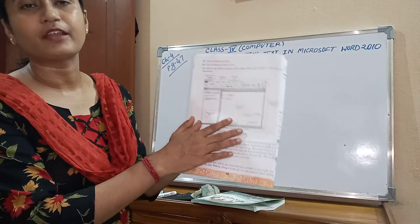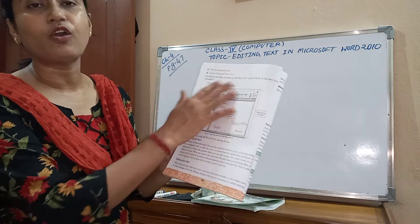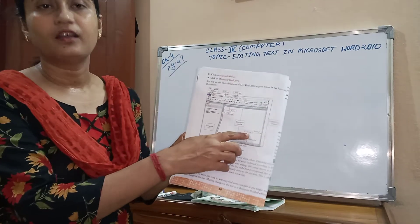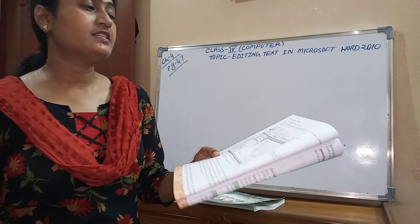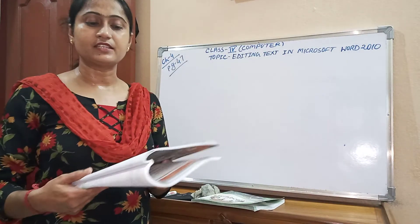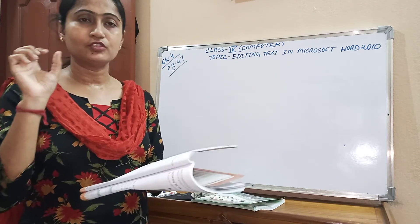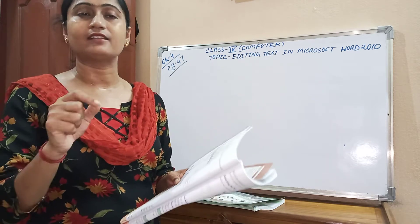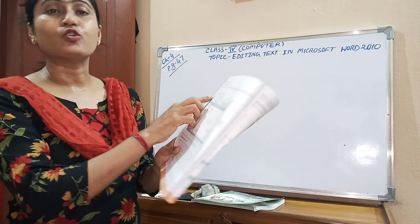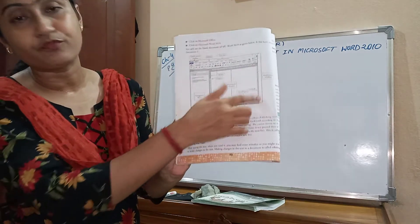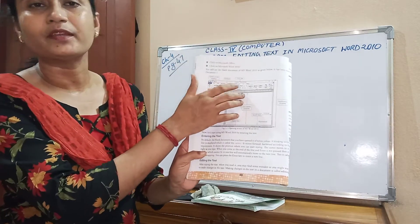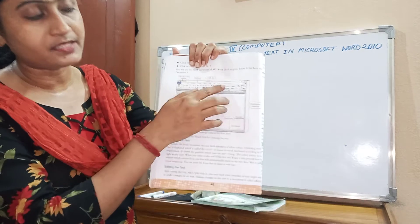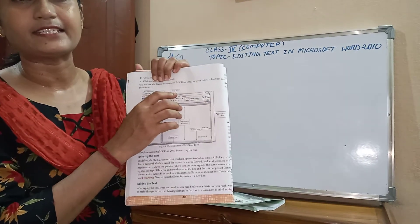When we click Microsoft Word 2010, this type of window will open. You will see the blank document of MS Word 2010. You just click the blank document — it has been named Document 1. When you click the blank document, this window will open, and the name Document 1 will always appear in the title bar.